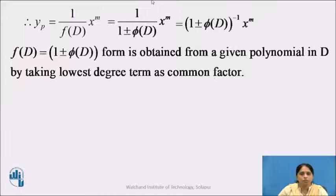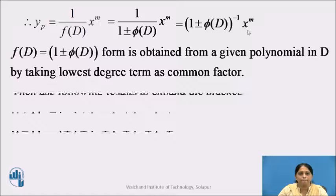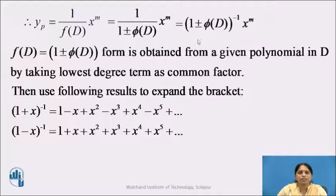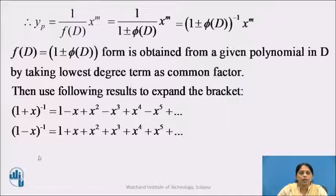Therefore, we can write 1 upon (1 ± phi(D)) as (1 ± phi(D)) raised to minus 1, multiplied by x raised to m. After expressing it in this form, use the following results to expand the bracket: (1 + x)^(-1) = 1 - x + x² - x³ + ... and (1 - x)^(-1) = 1 + x + x² + x³ + ...